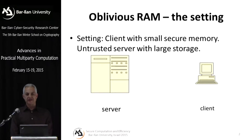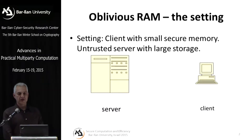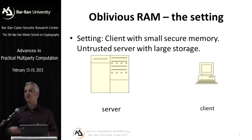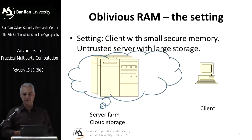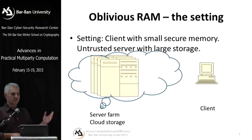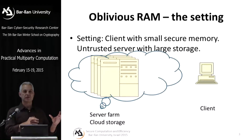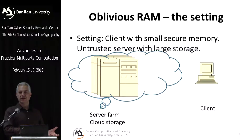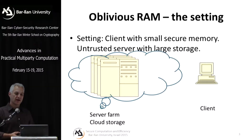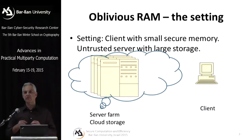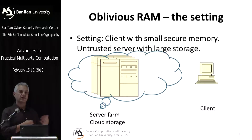The setting is the following. We have a client and a server. The client is somehow limited, so it wants to store data at the server. The client has a small secure memory, and the server has a very large but insecure memory — the server is untrusted. The server could be a server farm or cloud storage — any setting where the client is small and weak and the server is much more powerful. The initial motivation was that the client was a CPU with a limited number of registers, and the server was a RAM memory that the CPU wants to access. That's the motivation for the name Oblivious SRAM.